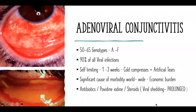Coming to adenoviral conjunctivitis, there are nearly 65 genotypes of adenovirus that can cause conjunctivitis, from subtypes A to F, and these constitute 90% of all viral infections in the eye. Usually this disease is self-limiting, resolving in one week, though in some cases it may prolong to three weeks. Cold compresses and artificial tears suffice in most cases. However, because of its nature, it causes significant morbidity worldwide, leading to economic burden.